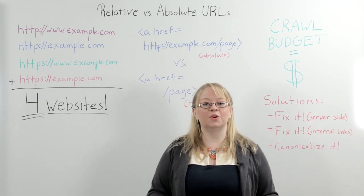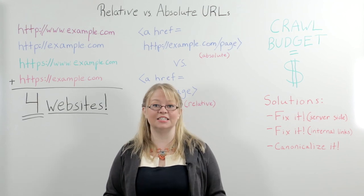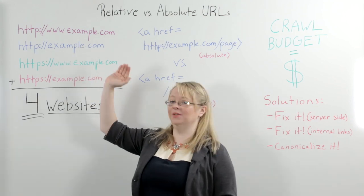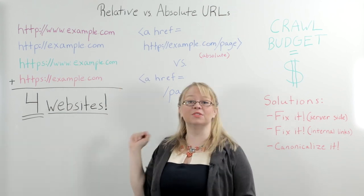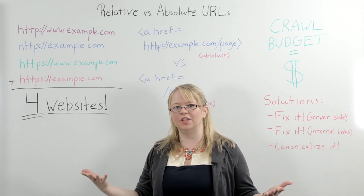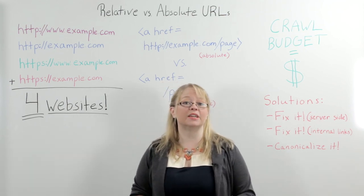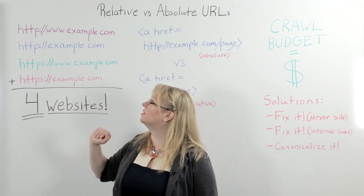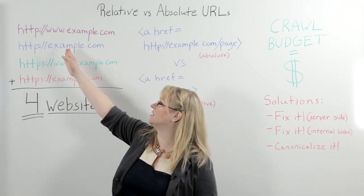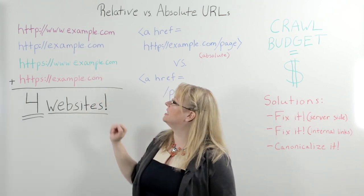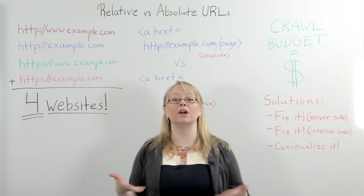At any given time, your website can have several different configurations that might be causing duplicate content issues. You could have just standard HTTP, or www.example.com — that's pretty standard format for a website. But the main sources of domain-level duplicate content are when non-www.example.com does not redirect to the www, or vice versa, and when HTTPS versions of your URLs are not forced to resolve to HTTP versions, or vice versa.